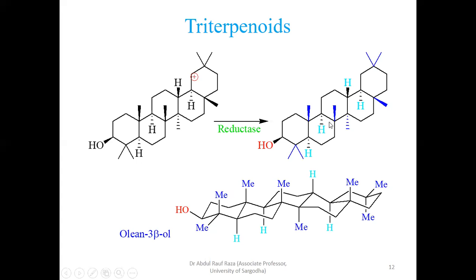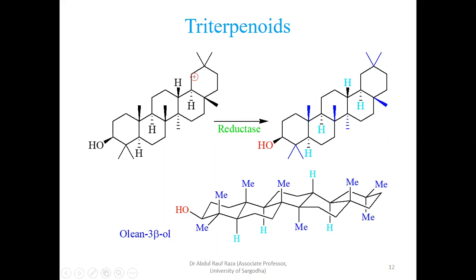In this pentacyclic triterpenoid, 22 carbons are making the rings and eight carbons in the form of methyl groups are outside the ring — totaling 30 carbons. Some molecules may have a carboxylic group at various positions. This forms via oxidation: oxidase converts a methyl into hydroxymethyl, which is further oxidized to an aldehyde, and then the aldehyde is further oxidized to carboxylic acid.